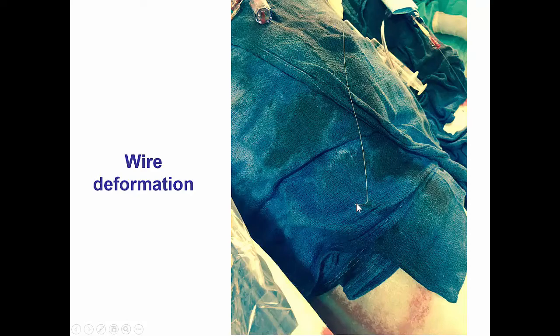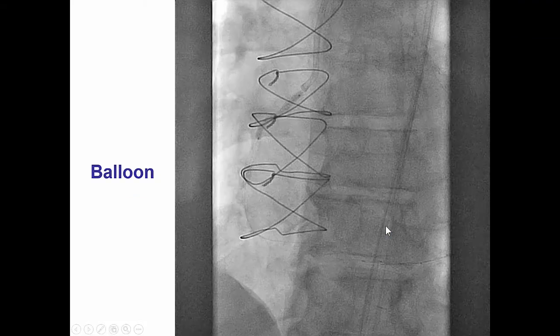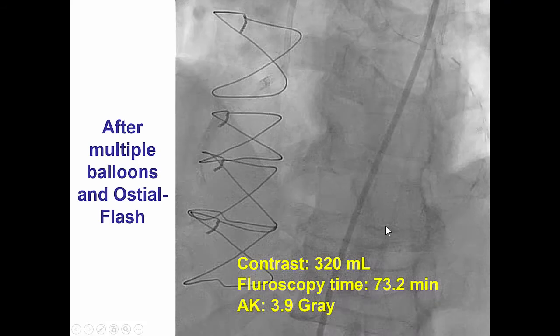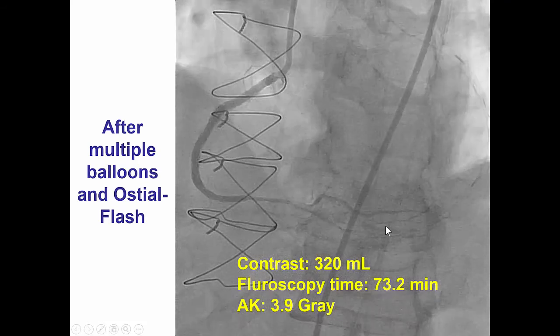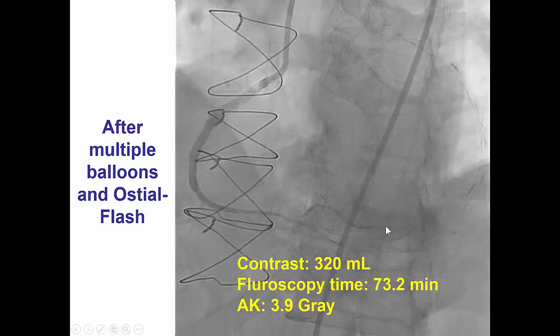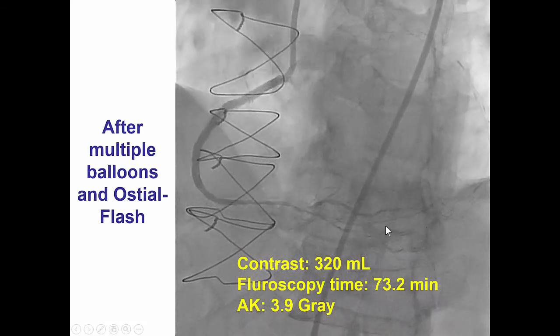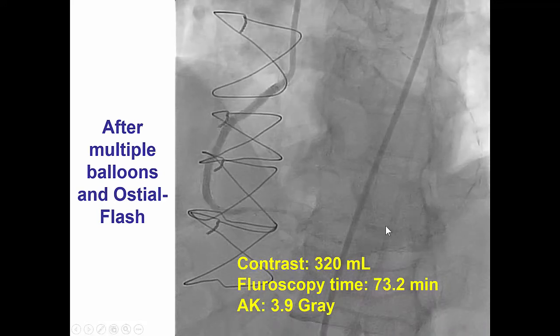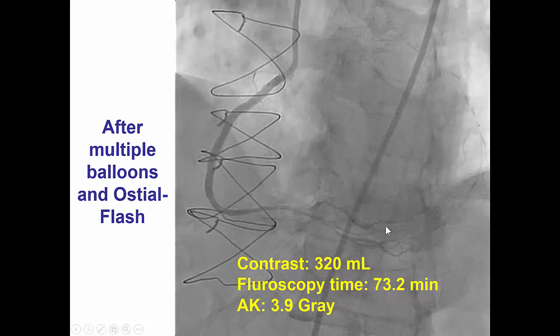This illustrates how challenging it was advancing the guidewires through the LIMA — there is significant tortuosity and deformation of the wires that have to navigate through all this tortuosity. The lesion was subsequently ballooned with high-pressure balloon inflations, and then after multiple balloons and use of an ostial flush catheter, we were able to recanalize the lesion and obtain an excellent result.